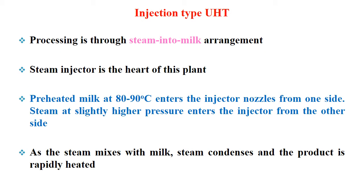In the direct UHT system there are two methods: injection type and infusion type. In injection type, processing is through steam into milk arrangement — steam is injected into the milk for heating and sterilization, so the steam injector is the heart of this plant. The preheated milk at about 80 to 90 degrees Celsius enters the injector nozzles from one side and steam at slightly higher pressure enters from the other side. As the steam mixes with milk, it condenses and the product is rapidly heated. The heat from the steam is taken by the milk instantly, and the steam after losing heat gets condensed and exits through the outlet.